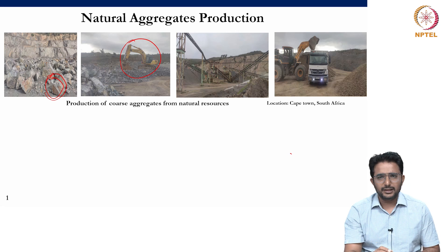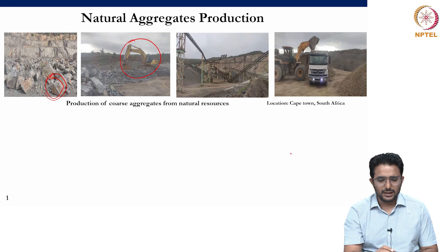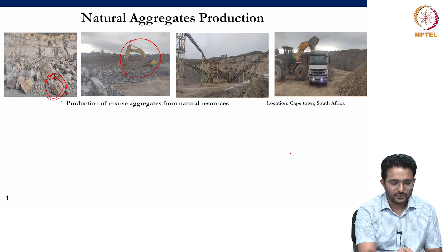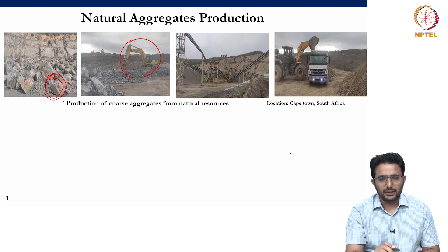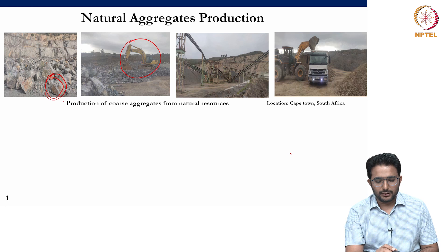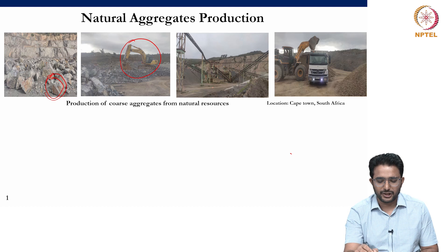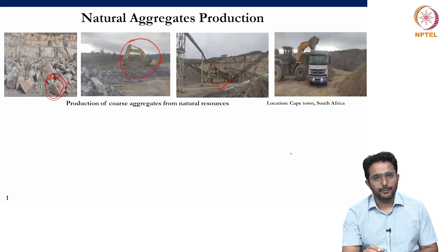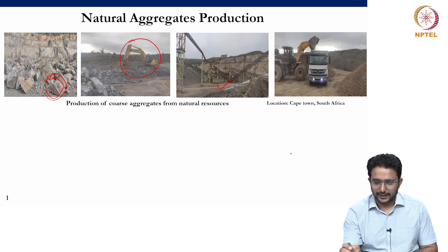In this picture you can see they are using a normal excavator to reduce the size. If the big boulder size is 1 to 2 meters, these techniques will be able to reduce the size to around 600 to 700 mm. Thereafter, the smaller-size boulders are transported to the crushing units where resizing is done to get different sizes of coarse natural aggregates.